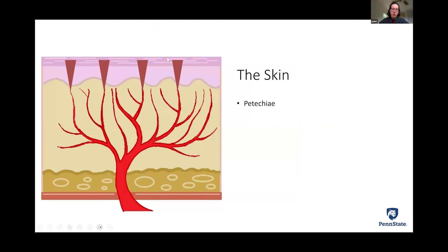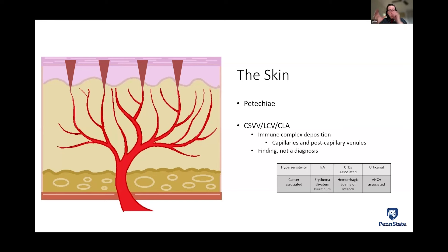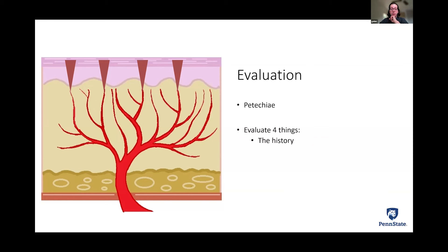When the vessel at the tip of the tree is damaged, red blood cells escape and become visible as petechia. We call this cutaneous small vessel vasculitis. Small vessel vasculitis is a family with many members: hypersensitivity, IgA type, autoimmune disease associated, urticarial, and ANCA types. A skin biopsy is an important part of the workup. We already know the patient has vasculitis—the biopsy helps us determine which type.